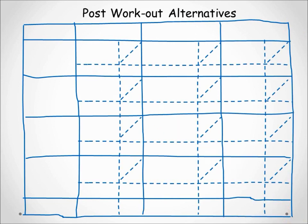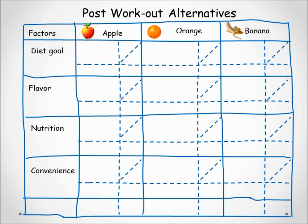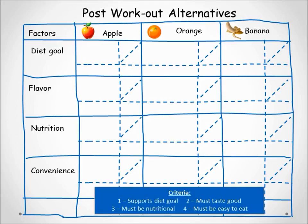Our alternatives — apple, orange, and banana — are entered at the top. Factors are then entered down the left side. At this point we start asking questions such as: what is it that makes an apple different from an orange in the diet goal, or what makes an orange different from a banana for convenience? The next step is to define the criteria for each factor that will answer those questions.